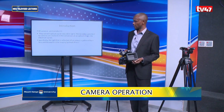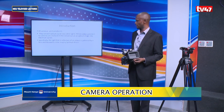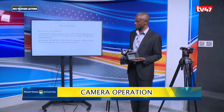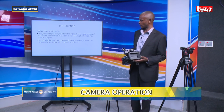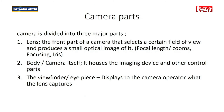Specifically, the light that is reflected off an object is gathered by a lens and focused on the imaging device. Today I want us to start by looking at the camera, which is usually defined into three major parts.